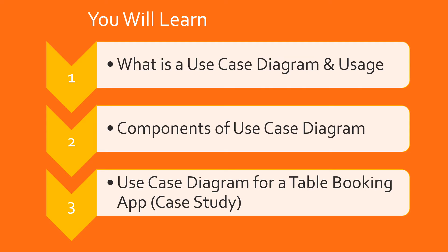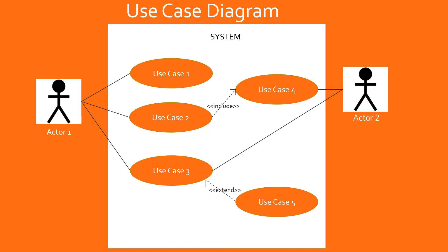Let's look at a use case diagram. A use case diagram looks like what you see on the screen. The purpose of a use case diagram is to demonstrate the different ways that a user might interact with the system. It is helpful in documenting the functional requirements and will help the development team to build a solution in line with the business requirements.